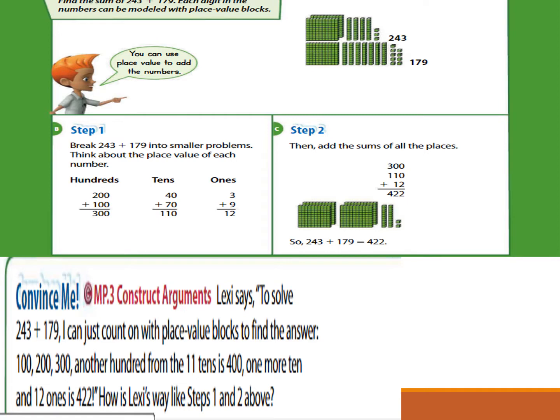Now look at the question below. Lexi says to solve 243 plus 179, she can just count on with place value blocks to find the answer. How can she count on? She says 100, 200, 300, then another 100 from the 11 tens gives 400. Now one more 10 and 12 ones gives 422. Is Lexi's way like step 1 and step 2 above? Lexi finds the sum by counting on beginning with hundreds, then tens, then ones — so this is like step 1: breaking the problem into smaller problems by place value.